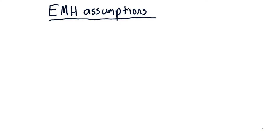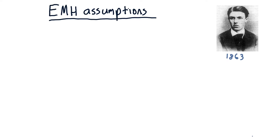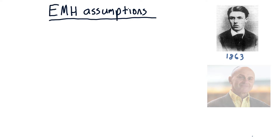The first ideas that eventually became the Efficient Markets Hypothesis were postulated by Jules Regno in 1863. Eugene Fama carried those ideas further in the 1960s, and it became his PhD thesis. Fama recently received the Nobel Prize, so we know those ideas were good.